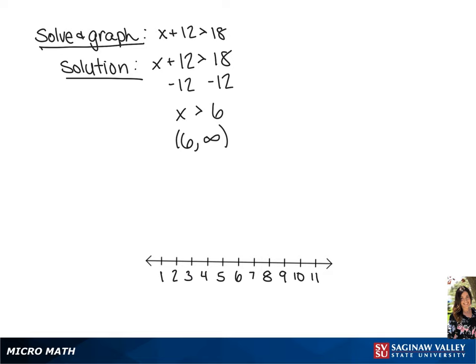Now, to graph this, we're going to draw an open circle around the 6, since x will not equal 6, and we will draw a line to the right, since x can be any number greater than 6.